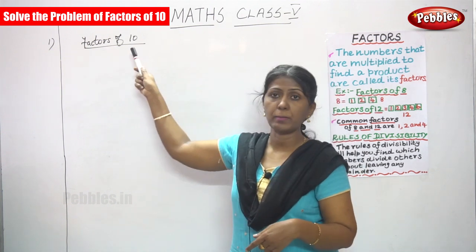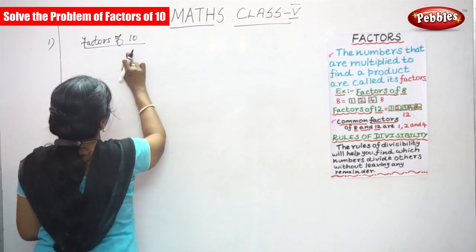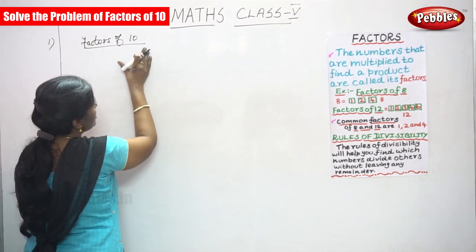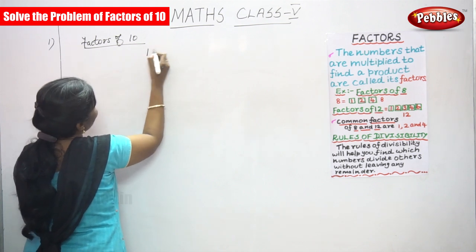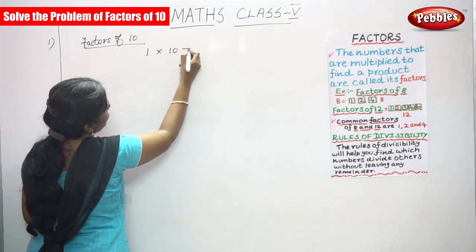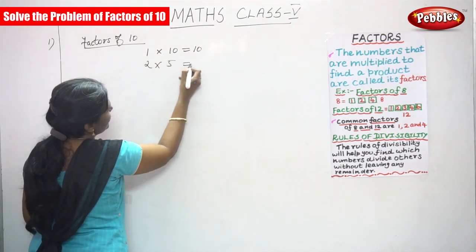Now we are going to solve the problem of factors of 10. If you want to write the factors of 10, first you have to write the multiplication table. So 1 into 10 you can get 10 and 2 into 5 you can get 10.